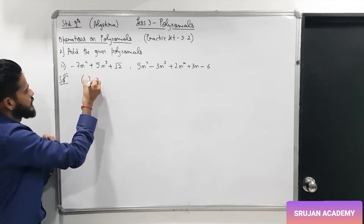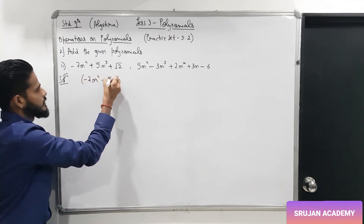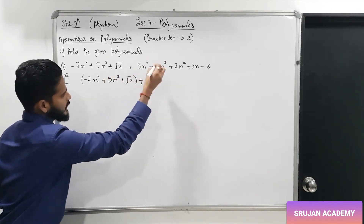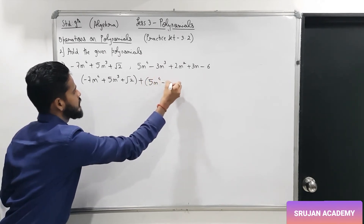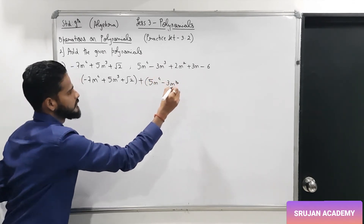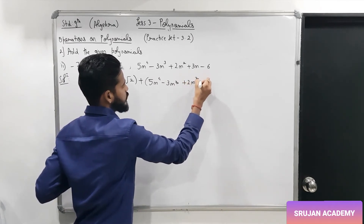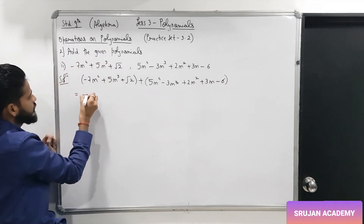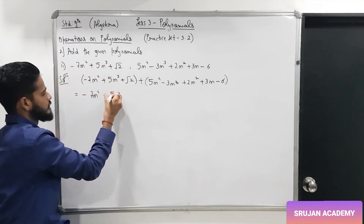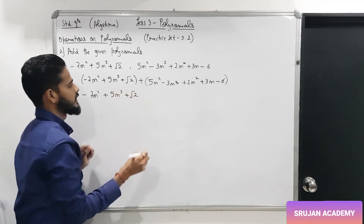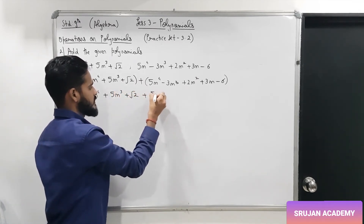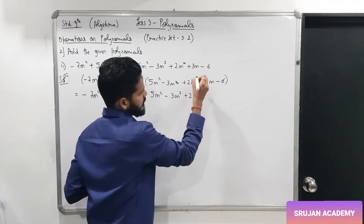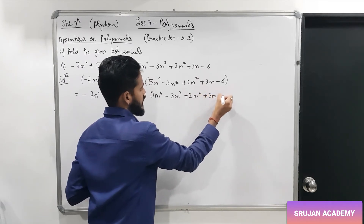Second sum: (−7m⁴ + 5m³ + √2) + (5m⁴ − 3m³ + 2m² + 3m − 6). Opening brackets: −7m⁴ + 5m³ + √2 + 5m⁴ − 3m³ + 2m² + 3m − 6. Now collect like terms: m⁴ terms together, m³ terms together, then m², m, and constant terms.